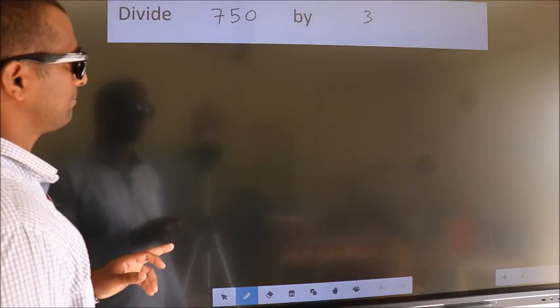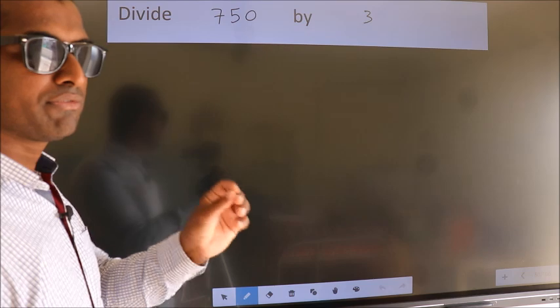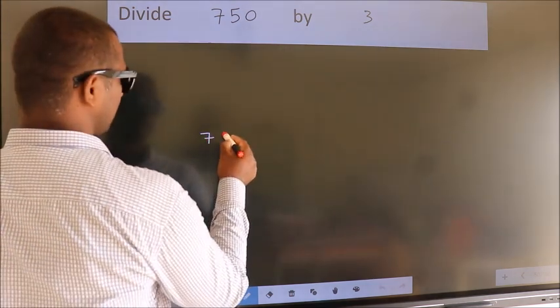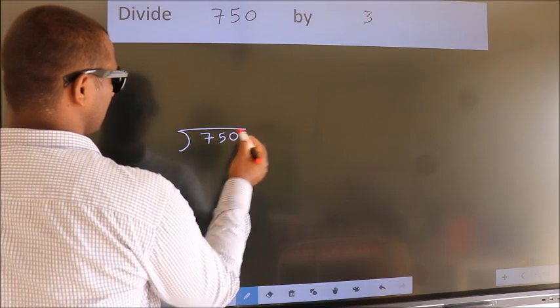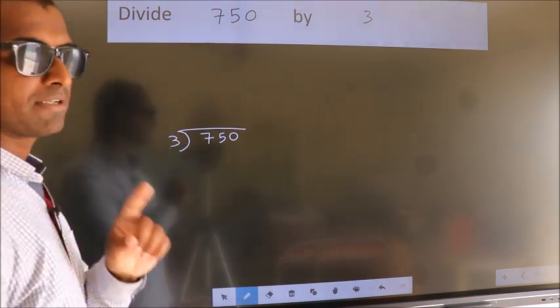Divide 750 by 3. To do this division, we should frame it in this way. 750 here, 3 here. This is your step 1.